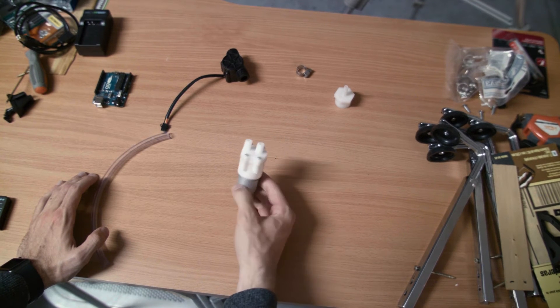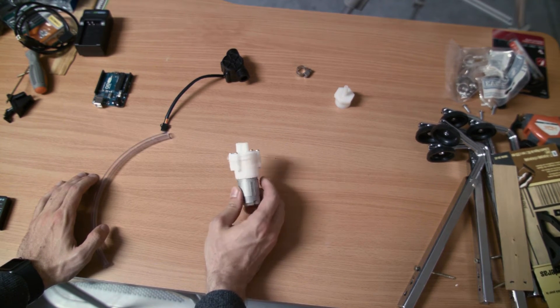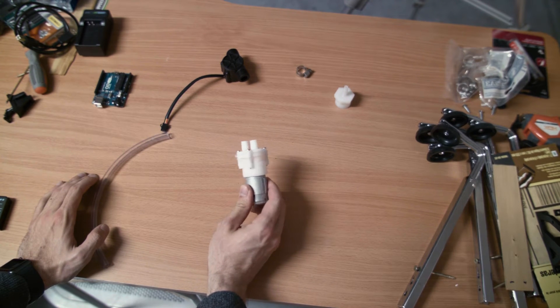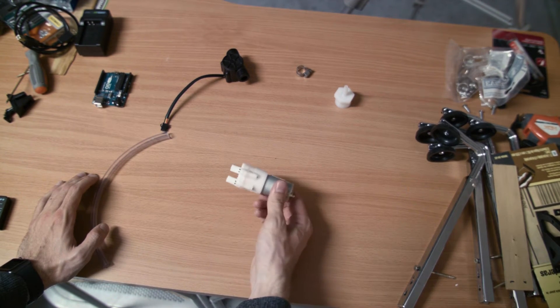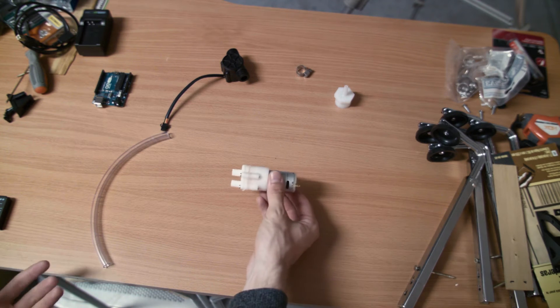As you remember from last time, we have the self-priming pumps. Self-priming pumps are pumps that you don't have to submerge in water. You can start them off dry, and they can be above the water basically.